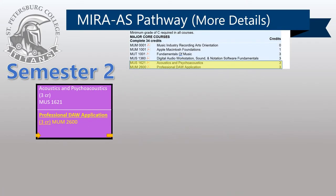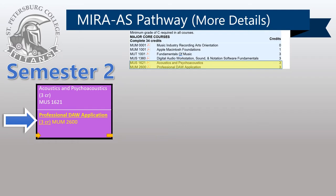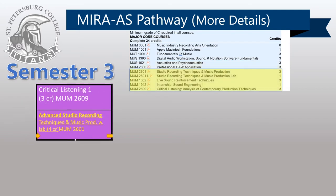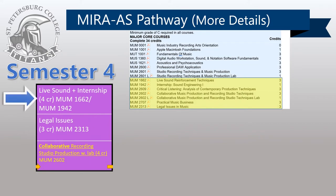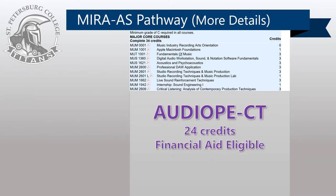Semester 2 Core Courses consist of MUS-1621 Acoustics and Psychoacoustics, and MUM-2600 Professional Digital Audio Workstation Application. Semester 3 Core consists of MUS-2609 Critical Listening Analysis of Contemporary Production Techniques, and MUS-2601 and MUS-2601L Studio Recording Techniques and Music Production. Semester 4 Core consists of MUS-1662 and MUS-1942 Live Sound Reinforcement Techniques and Live Sound Internship. This live sound class fits into a few different possible spots on the academic pathway, and we will help you decide the best semester for you in the MIRA Orientation course. Note: if you are doing the Audio Production and Engineering Certificate, all of these Core Courses mentioned so far make up the 24 credits required.